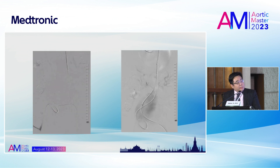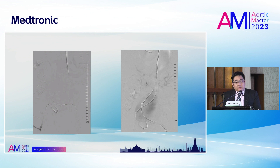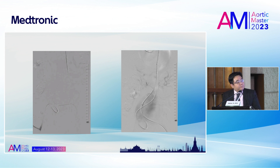I tried to insert a long 14 French sheath for the aortic balloon from the right side, but the 14 French sheath was kinking and could not pass through the iliac artery. So I had to change to the Sentrant sheath, but the Sentrant sheath is only 20–25 centimeters, so I could not bring it to support at the neck of the aorta. I then inserted the aortic balloon from the right side and inserted the main body from the left side.